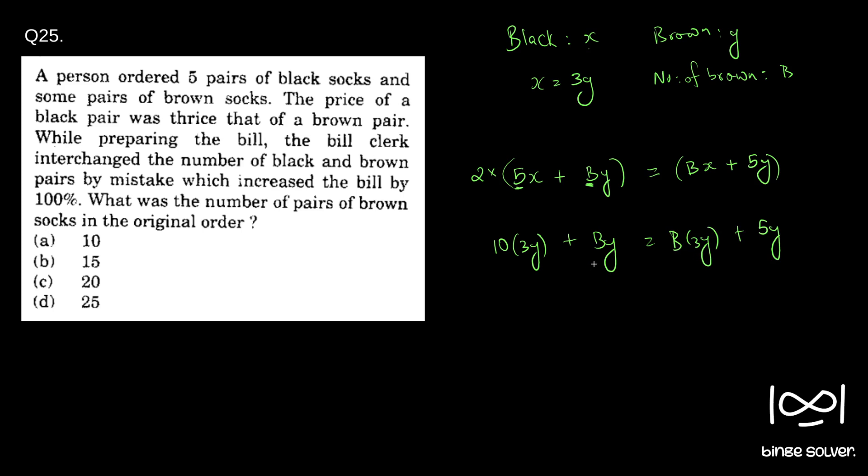So we need to find the variable B. We have 30y equal to 3By. Taking 2 inside, we have 2By. And taking 2By to the right-hand side, we have 30y minus 2By equal to 5y. That gives 25y equal to By, which implies B equal to 25.